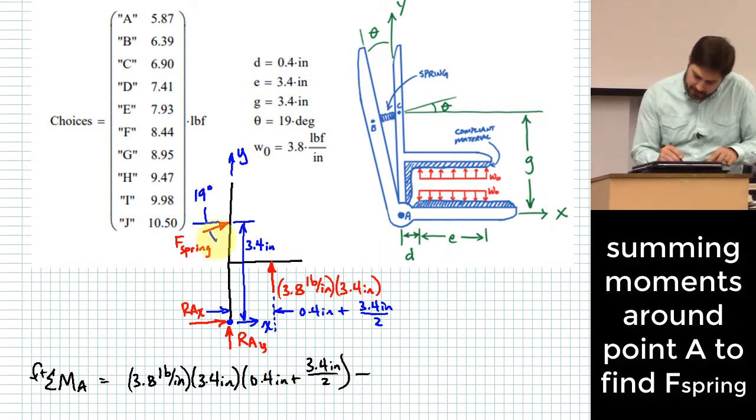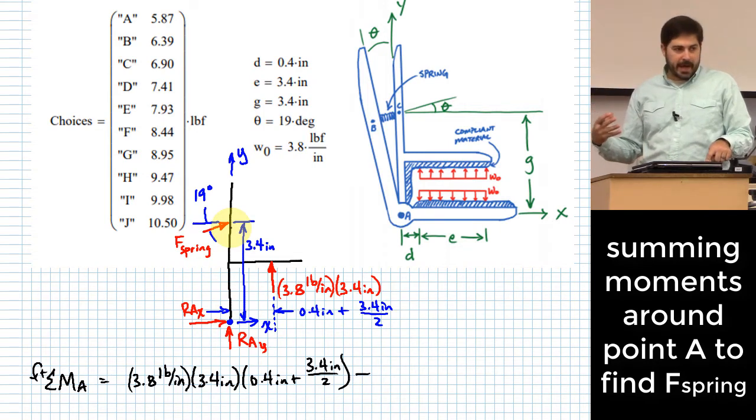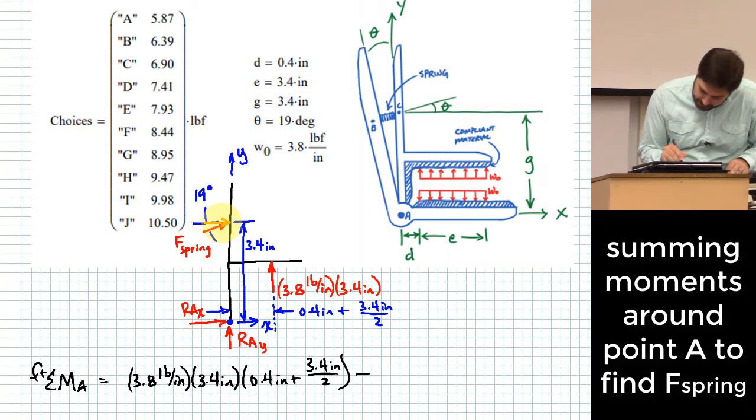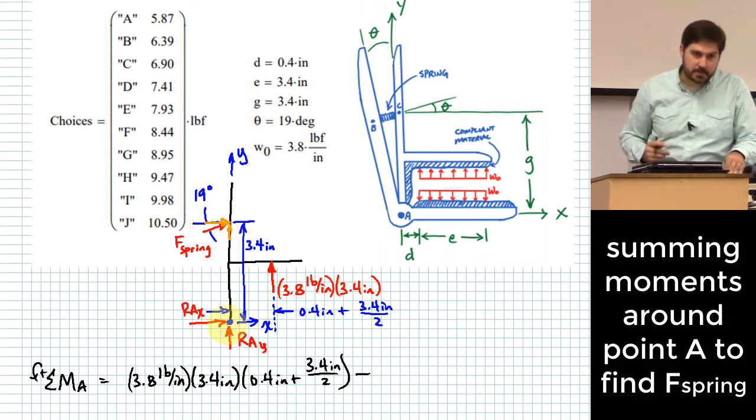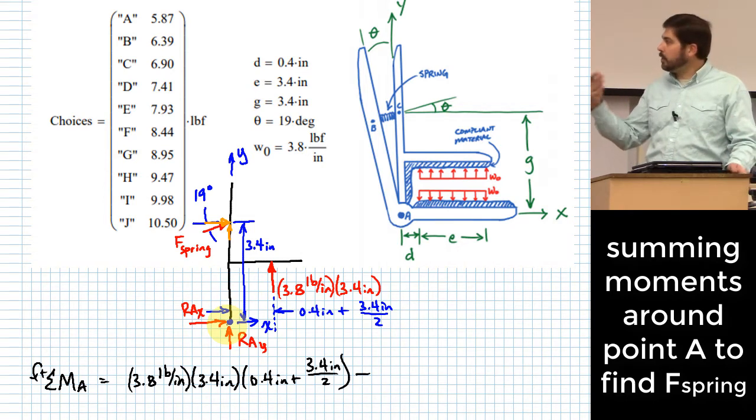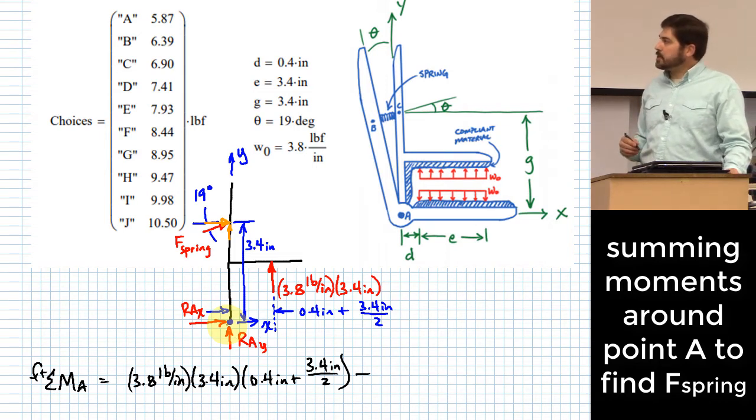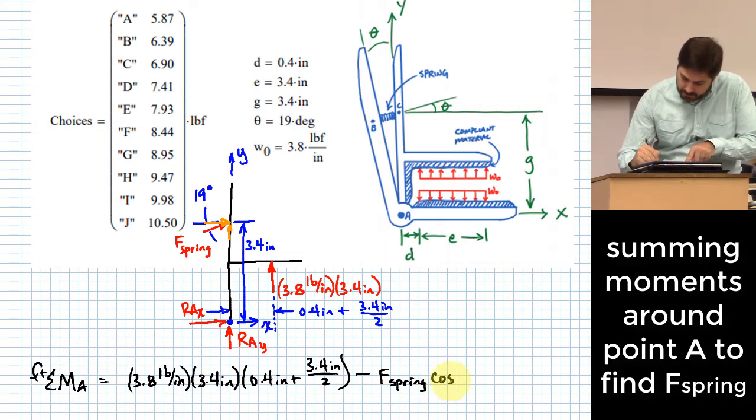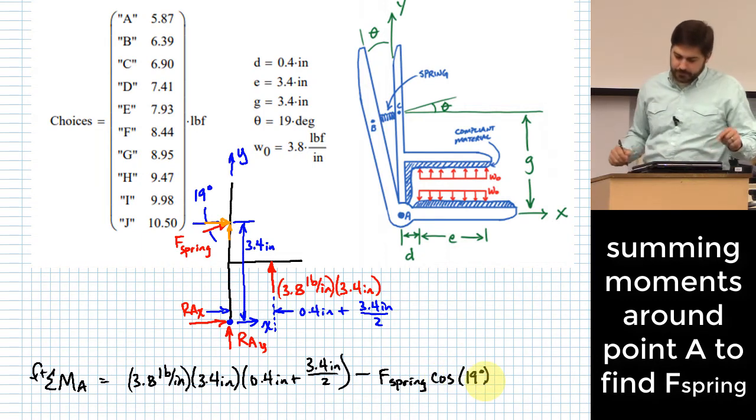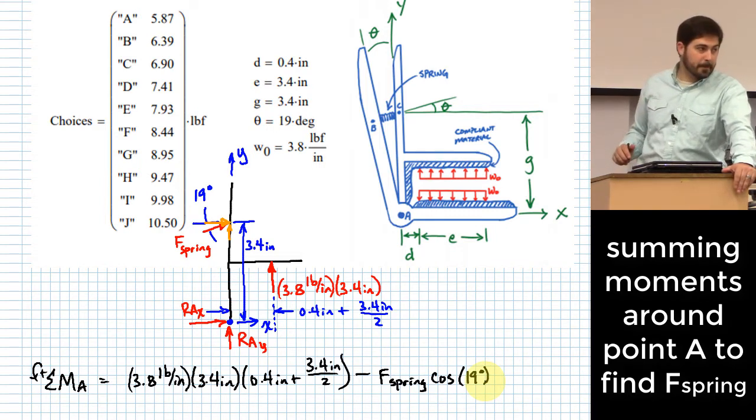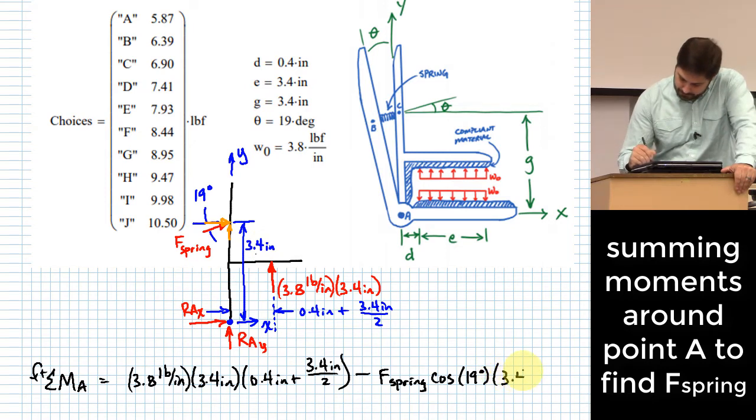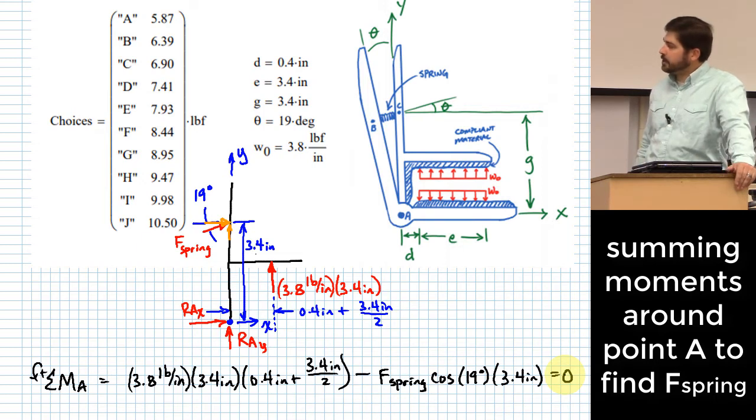To this, I'm going to subtract this F-spring, the effect of that rotationally around point A. So the rotational effect of F-spring around point A is due only to the horizontal component of it. The vertical component of it has a line of action that passes through A. So I don't have to deal with the vertical component. I only want to deal with the horizontal component of F-spring. How do I get just the horizontal component? Okay, F-spring multiplied by the cosine of 19 degrees. Okay, that gets me the horizontal component. What do I do with that? Yep, got to multiply by the distance from the line of action of that horizontal component to pin A, which was given right here with 3.4 inches.